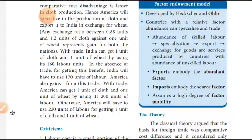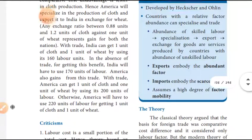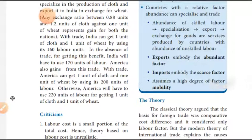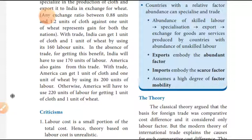India uses 80 labor units for wheat and 90 for cloth — that is 170 units, but with trade only 160 units are needed. America uses 240 labor units in total without trade. With specialization, 80 labor units are saved.